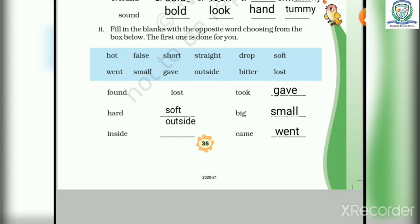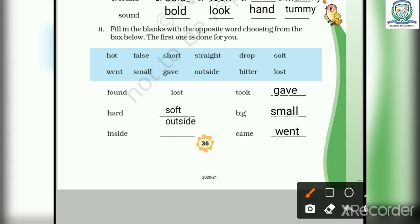Next is fill in the blanks with the opposite word choosing from the box below. The first one is done for you. Hamei yahaan par jho box mein words diye hai. Unmai se opposite words choose karke likhne hai. Sab se pahele hai found. Found ka opposite hoota hai lost. Hard ka opposite hai soft. Inside ka opposite hoota hai outside.